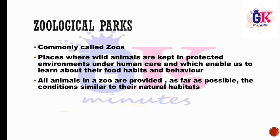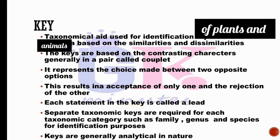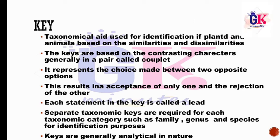Next, Key — a taxonomical aid used for the identification of plants and animals based on similarities and dissimilarities. A pair of contrasting characters is called a couplet, and each statement is called a lead. Keys are generally analytical in nature — we analyze this taxonomical aid.